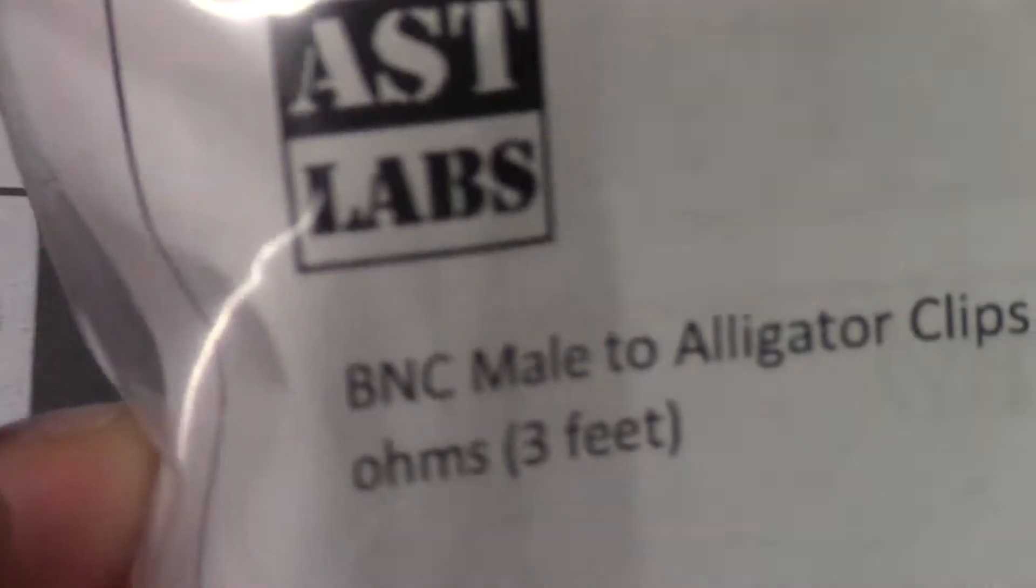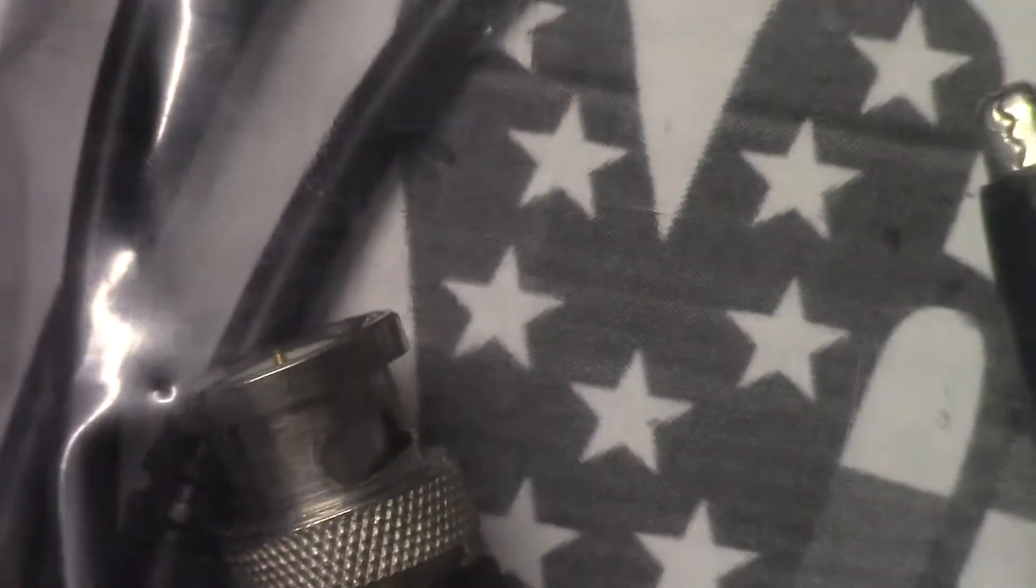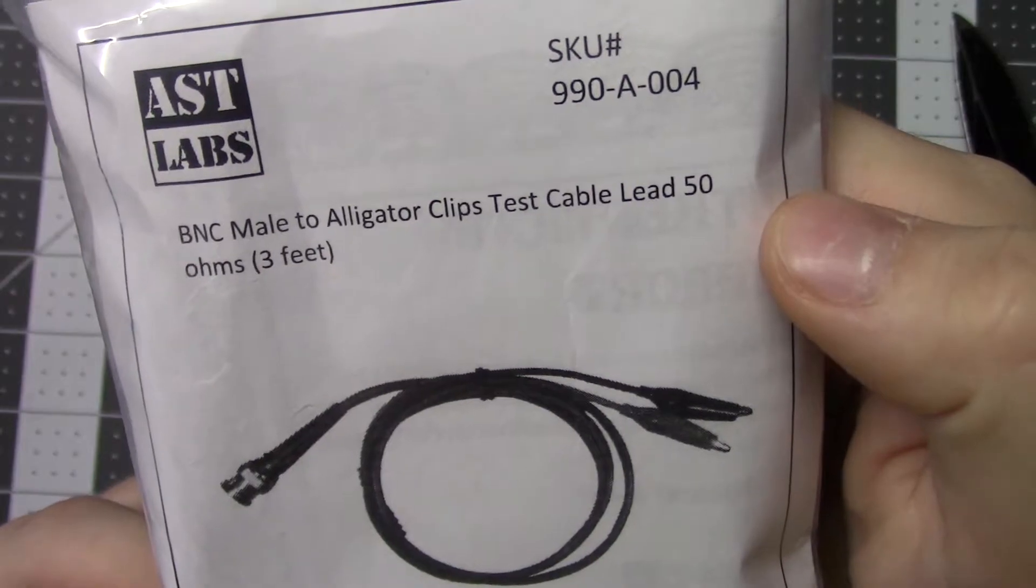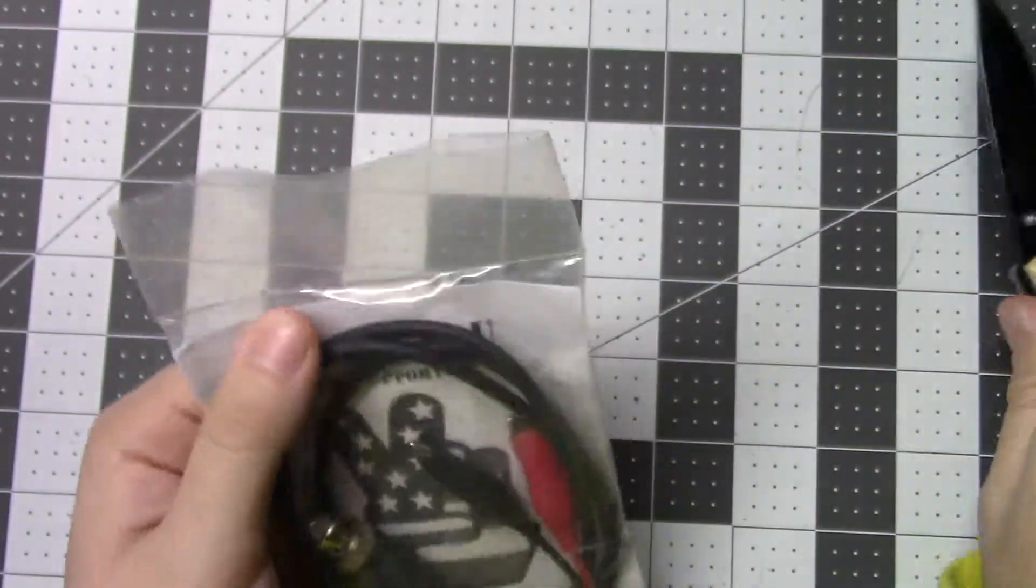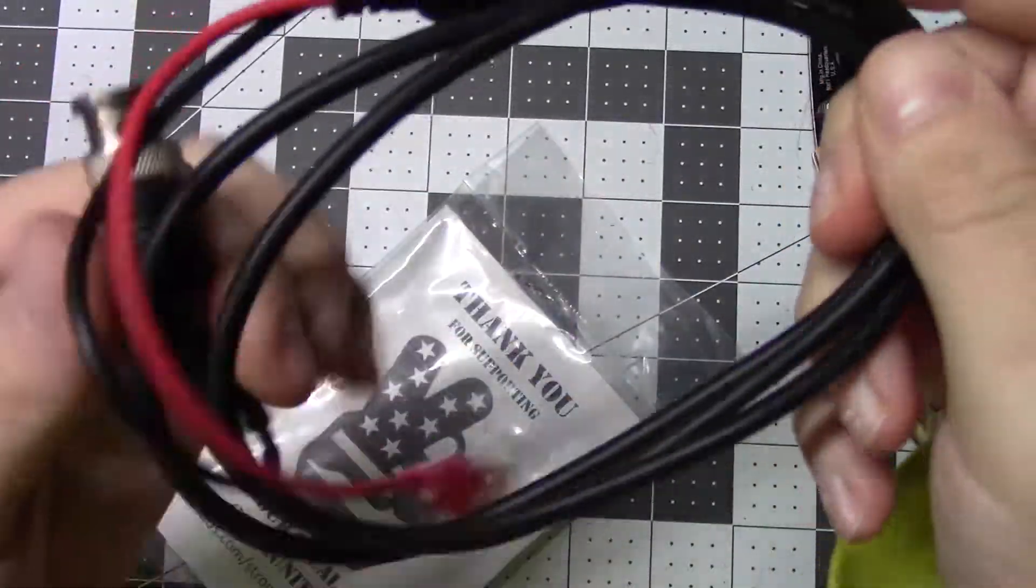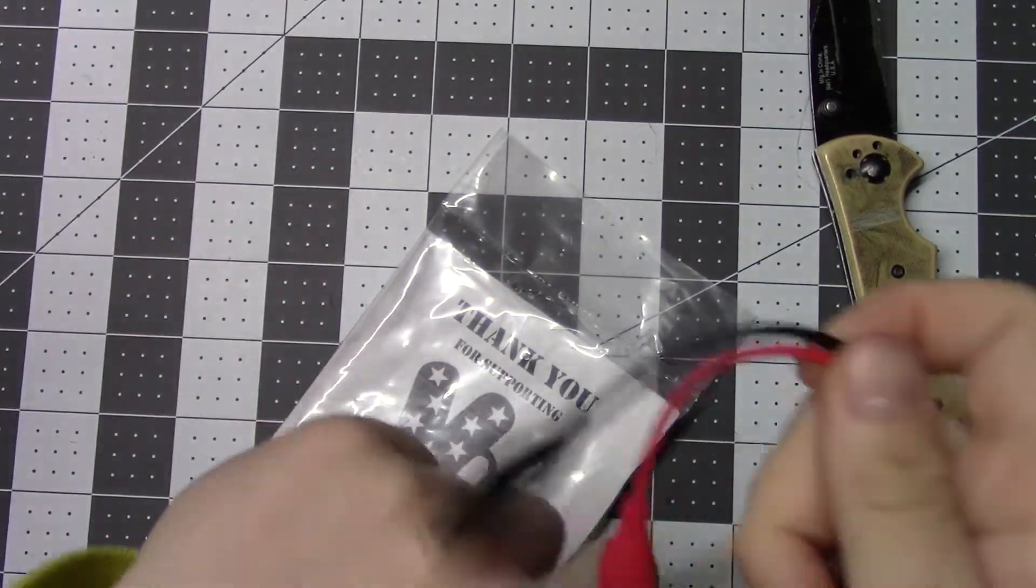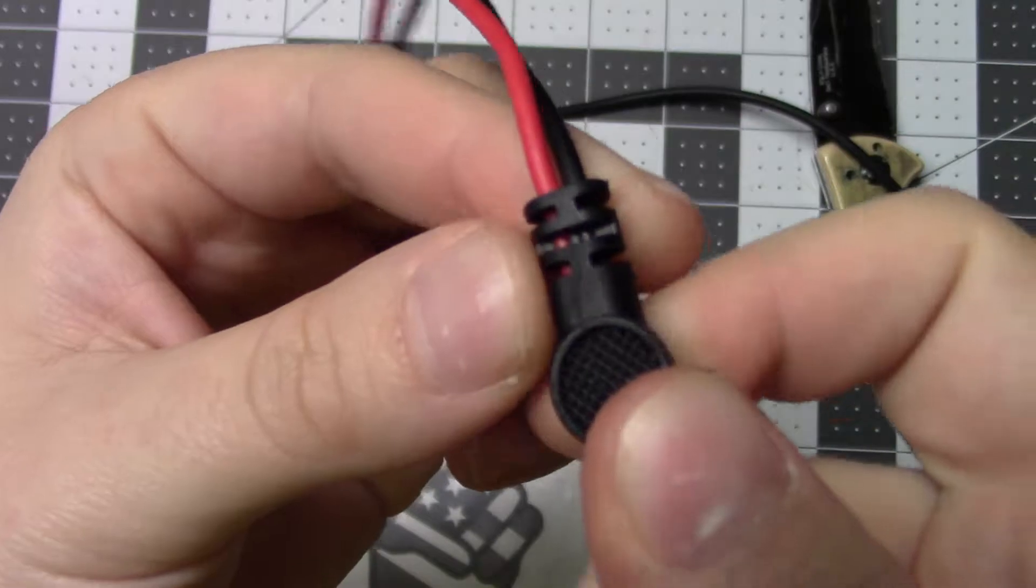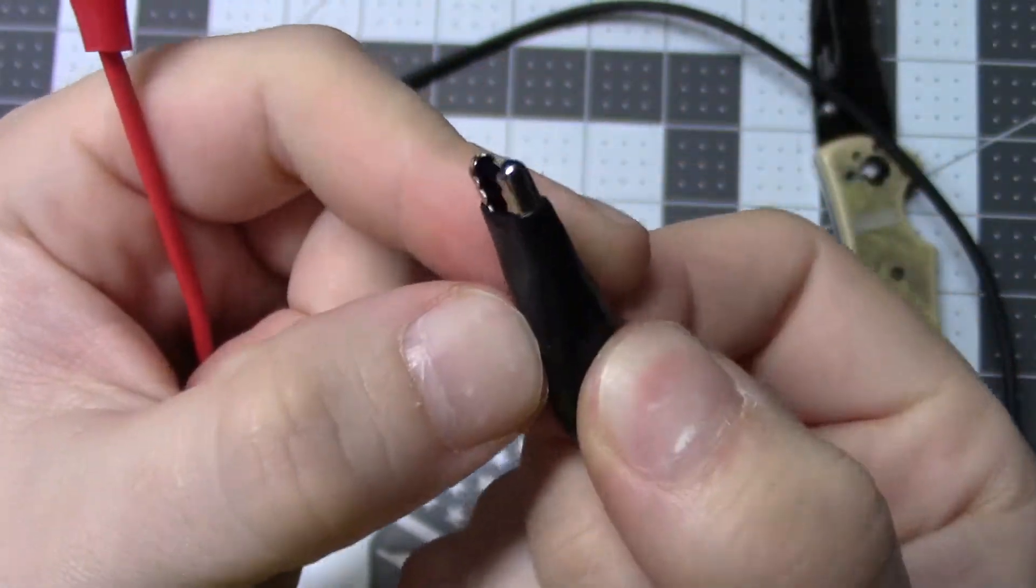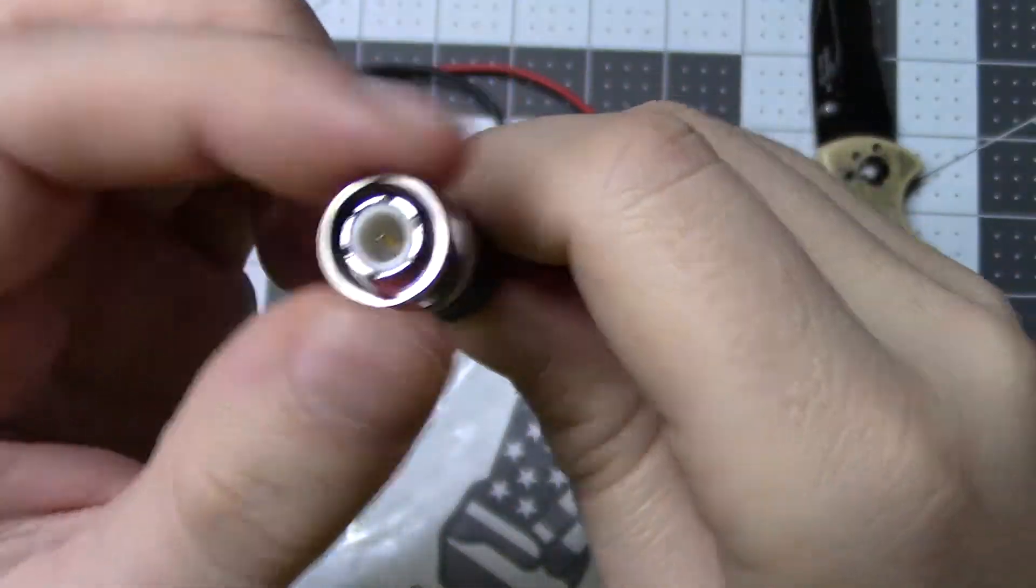Let's take a look at this AST Labs BNC to alligator clip test cable. Here we have it. 3 feet long, 50 ohms. It's got a nice little strain relief, the two alligator clips, and on this one, we got a BNC connector.